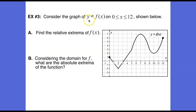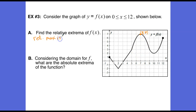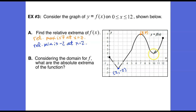In example 3, consider the graph of y equals f of x on the bounded interval 0 less than or equal to x less than or equal to 12. The relative max is 7 at x equals 7. There is a relative min of negative 2 at x equals 2, and another relative min of 2 at x equals 10.